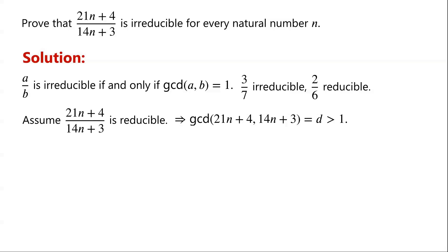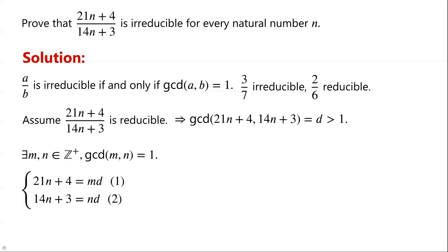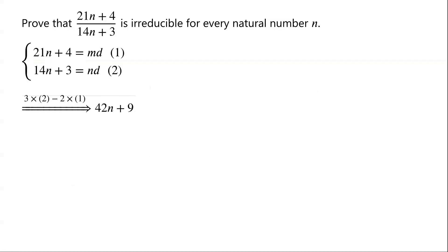So reducibility means the greatest common divisor of numerator and denominator is greater than 1. Therefore, there exist positive integers m and n, with gcd(m, n) = 1, such that 21n + 4 equals m times d. Taking 3 times equation 2 minus 2 times equation 1, we have: 42n + 9 minus 42n minus 8 equals nd minus md.